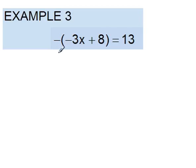So that means we're going to be distributing, and really this negative here is a negative 1. So we're going to take a negative 1 and multiply it times everything in the parentheses.